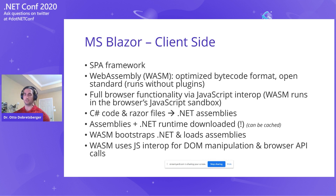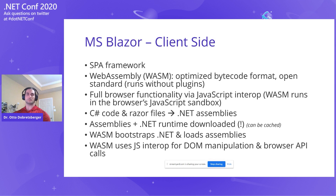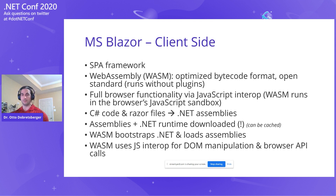You still have access to all the APIs that a browser regularly has access to in Blazor. You can still access video, pictures, files, and so on. Whatever your browser allows you to do, you can do in Blazor through JavaScript interop. Your C# code and Razor files will be compiled into .NET assemblies, and then those assemblies and the .NET runtime will be downloaded for a client-side WebAssembly project.